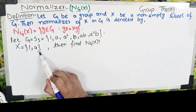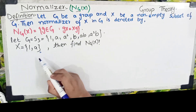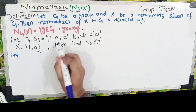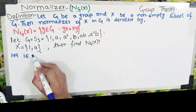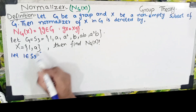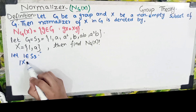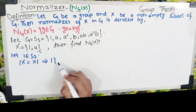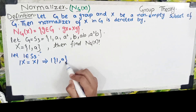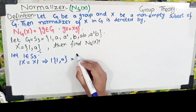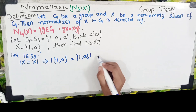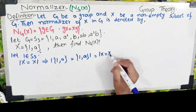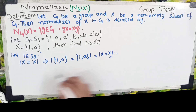Group کے اندر six elements موجود ہیں، ہم نے ایک ایک element کو لے کے subset کے ساتھ permute کرانا ہے اور check کرنا ہے۔ پہلے element لیتے ہیں: let 1 ∈ S3۔ یہ trivial case ہے — 1·X = X·1، دونوں صورتوں میں answer same آئے گا۔ So 1 belongs to N_G(X).